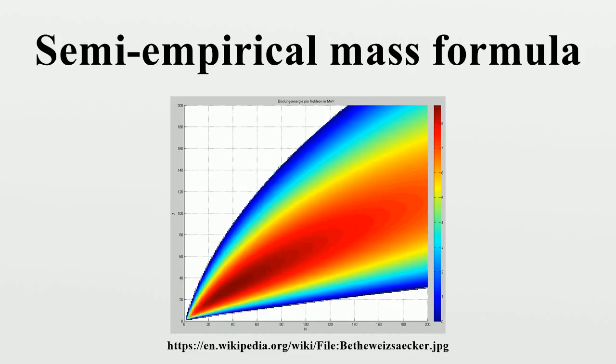Thus we get the first term contributes to the volume term in the semi-empirical mass formula and the second term is minus the asymmetry term, aA is 38 MeV. So calculating aA from the equation above, we get only half the measured value.